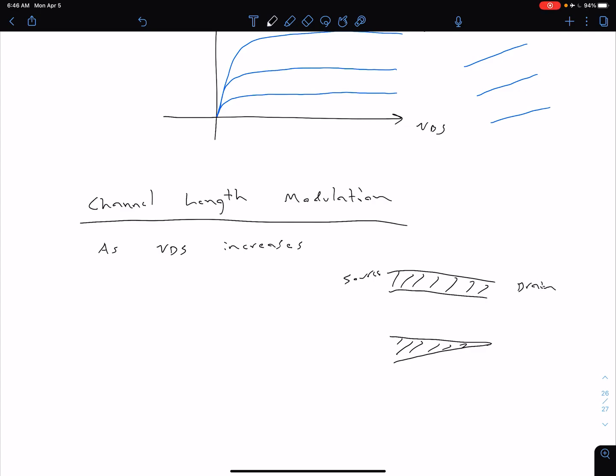So as that's increasing, that pinch-off point right here is actually going to be moving this way. So as VDS increases, our pinch-off point is moving towards the source. As that's moving towards the source, our channel length is going to get smaller. By channel length, I'm saying the actual space that our electrons are going to be moving through.